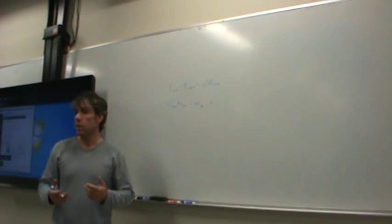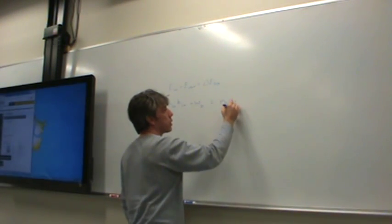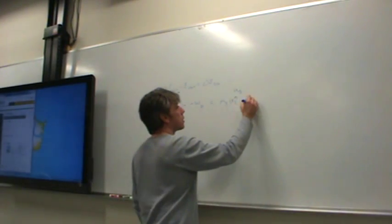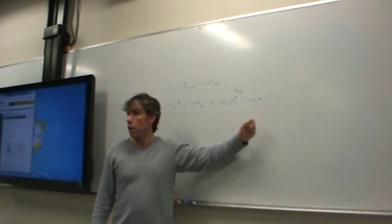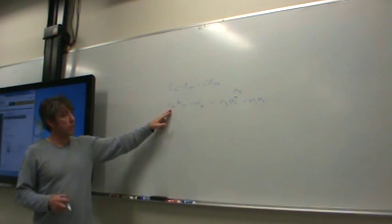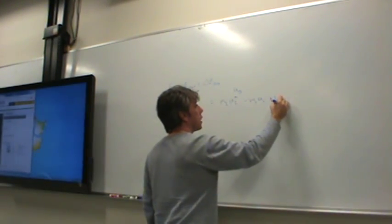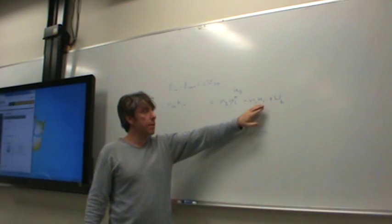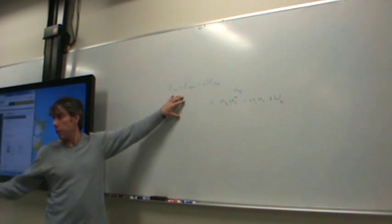We end up with some mass in state 2 that's more than the mass in state 1, with some internal energy — which you guys have already decided would be u sub g in state 2 — less the mass in state 1 times the internal energy in state 1. Notice I can't write u sub f or u sub g here because it's a mixture. This is what constrains the amount of mass that comes in.